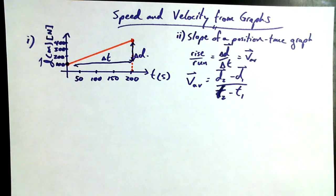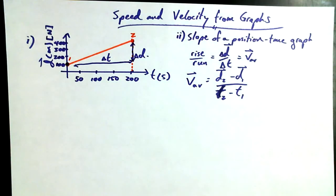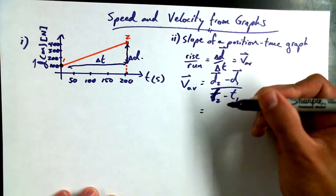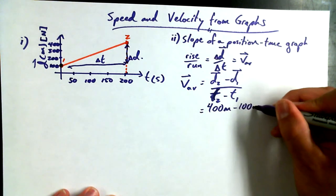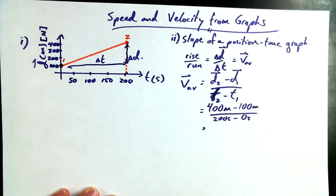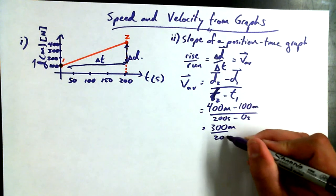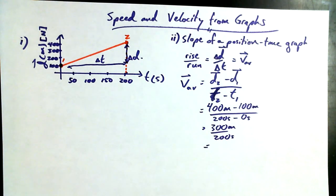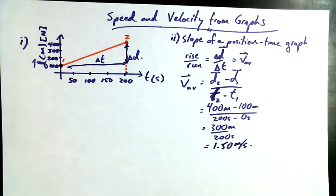Whenever we're defining points 1 and point 2, we always read from left to right. So this would be point 1, and this would be point 2. So position 2, in this case, as I'm subbing in my values, would be 400 meters. Position 1 would be 100 meters. T2 is 200 seconds. And T1 is 0 seconds. So 400 minus 100 is 300, 300 meters divided by 200 seconds. And we end up getting 1.50, three significant digits, meters per second.